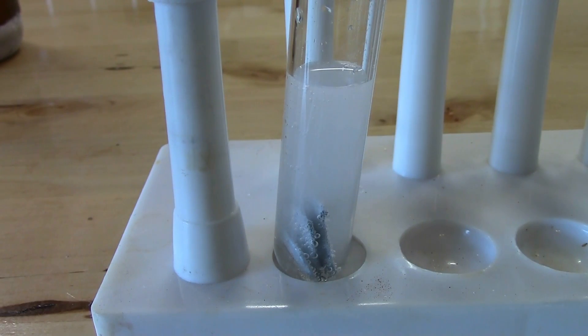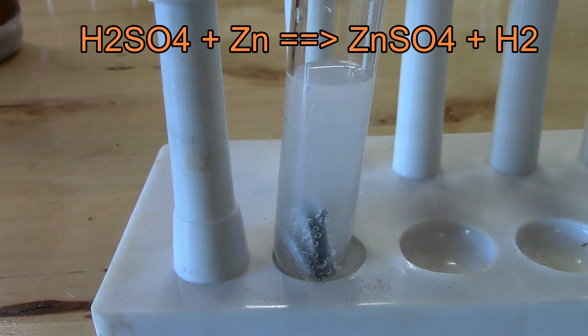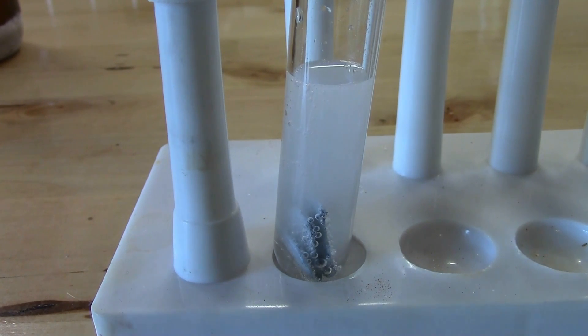As you can see, we're getting a pretty vigorous reaction between the acid and the zinc. This is forming zinc sulfate and hydrogen gas - those are the bubbles you're seeing. I put a cap on the test tube very loosely since it's generating gas. We're trying to accumulate some of this hydrogen gas because hydrogen is much lighter than air, so it would just fly out of the test tube and we wouldn't be able to collect it.